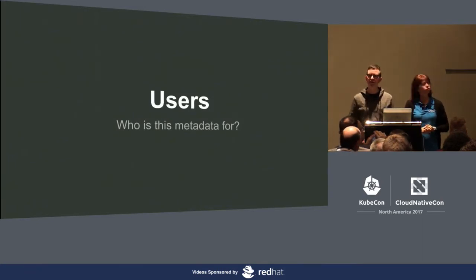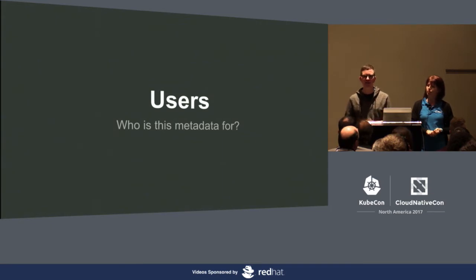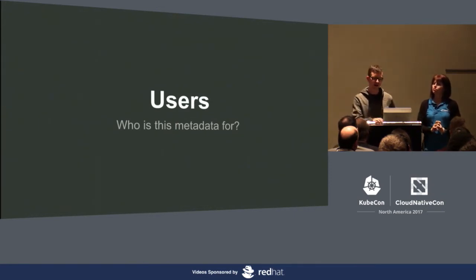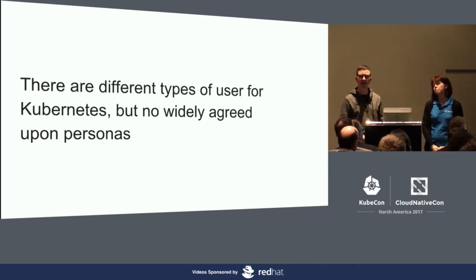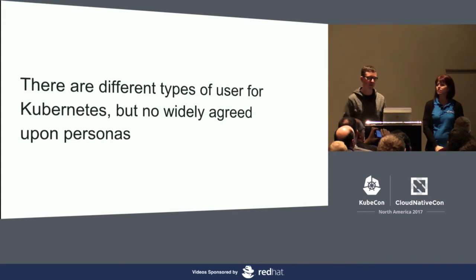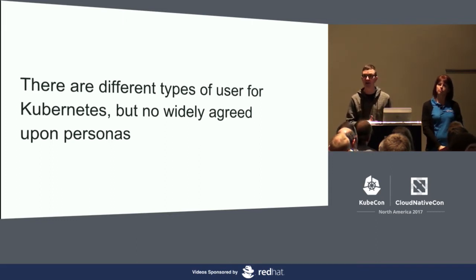So we sort of know what metadata is, there are some bits and pieces in Kubernetes we can use to manipulate it, and some areas of metadata outside the direct scope of Kubernetes labels and annotations. But why do we care, and who is it for? Thinking about Kubernetes as a platform, there are different types of users who use Kubernetes as part of their job — they're not necessarily interested enough to come to Austin; it's just something that's there. And there isn't really a widely agreed set of user personas or roles within the community at the moment.